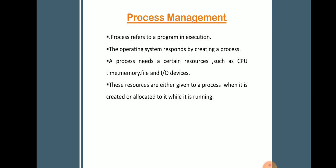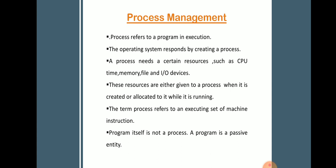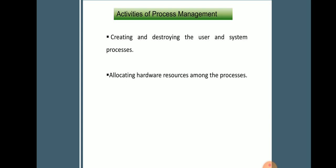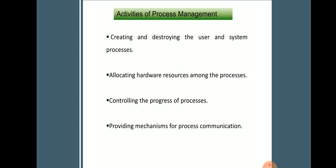These resources are either given to the process when it is created or allocated while it is running. When a process is terminated, the operating system reclaims the reusable resources. The OS is responsible for the following activities of process management: creating and destroying user and system processes; allocating hardware resources among processes; controlling the progress of processes; providing mechanisms for process communication; and providing mechanisms for deadlock handling.